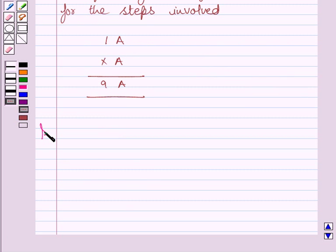Let us now move on to the solution. First of all, we will rewrite the given puzzle. That is, 1A multiplied by A gives 9A.